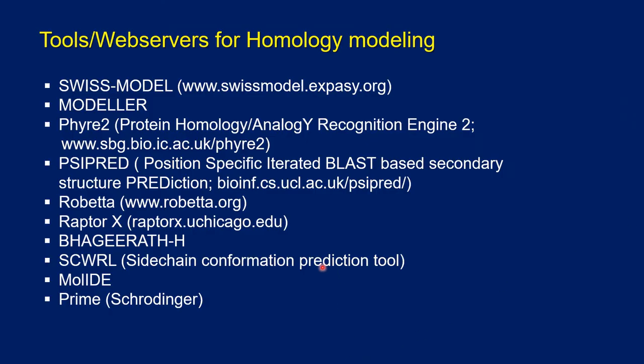The different tools and web servers available for homology modeling are SwissModel, Modeler, Phyre2, PSIPRED, Robetta, RaptorX, Bhagirath, SCWRL - that is side chain conformation prediction tool - MolIDE, and Prime.